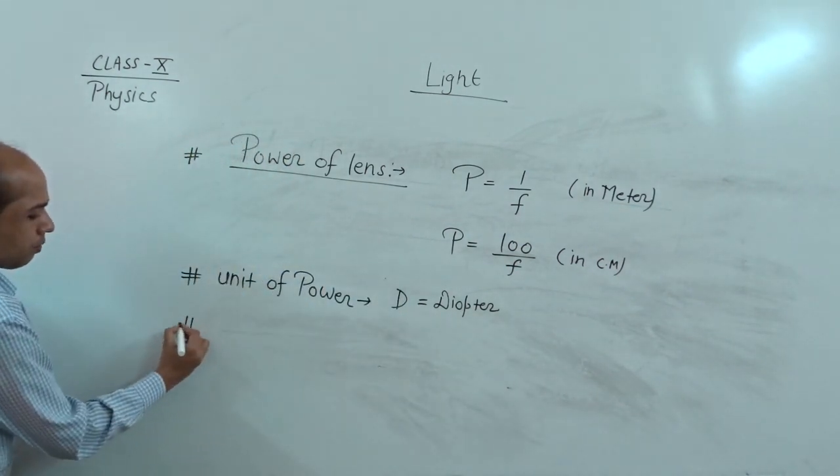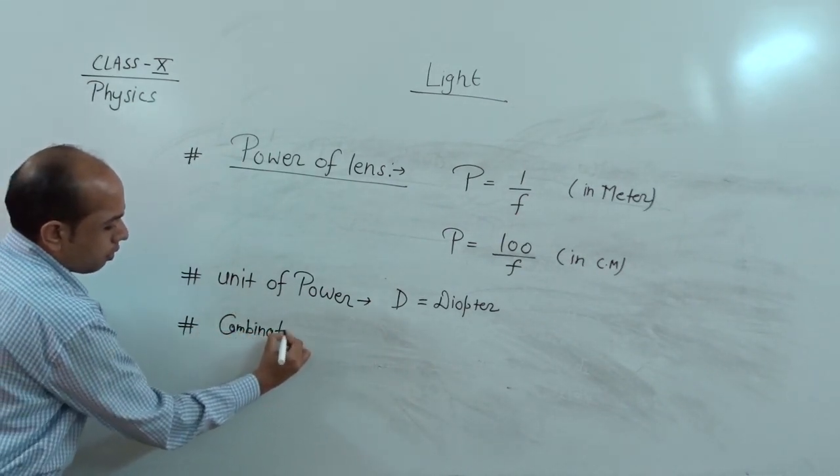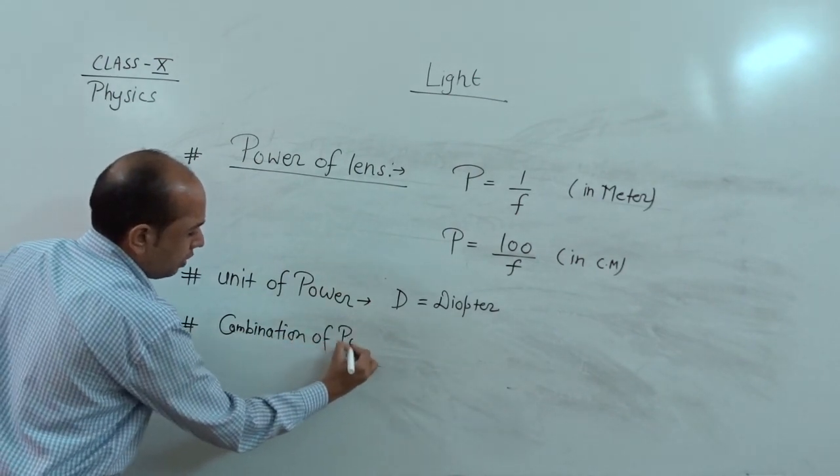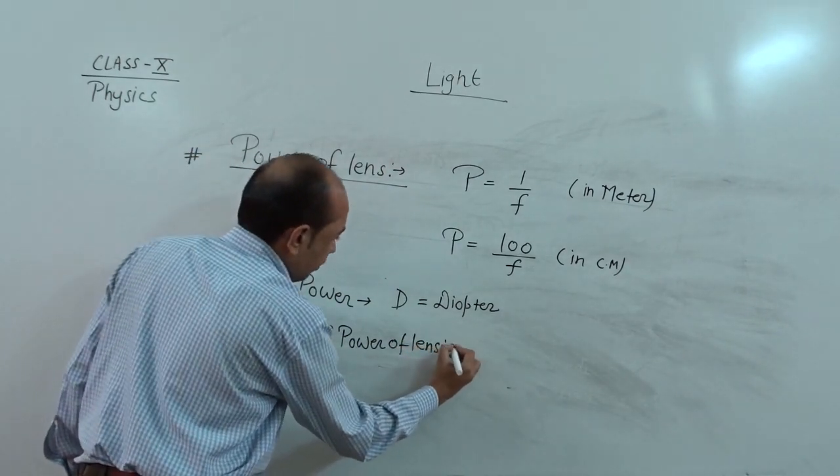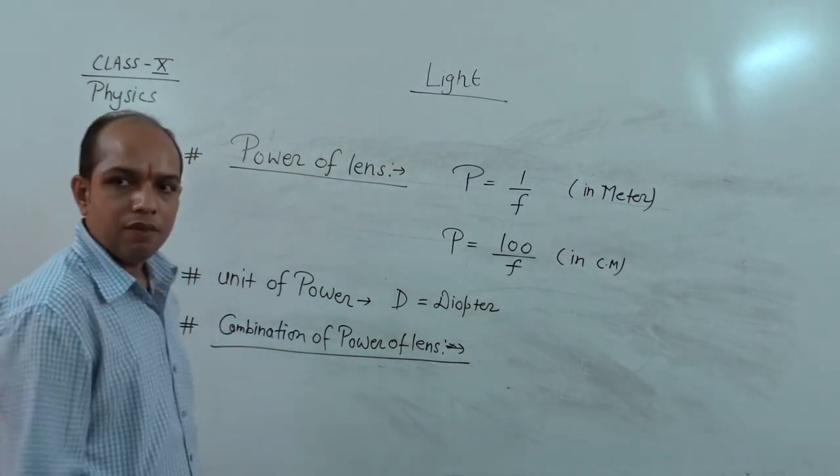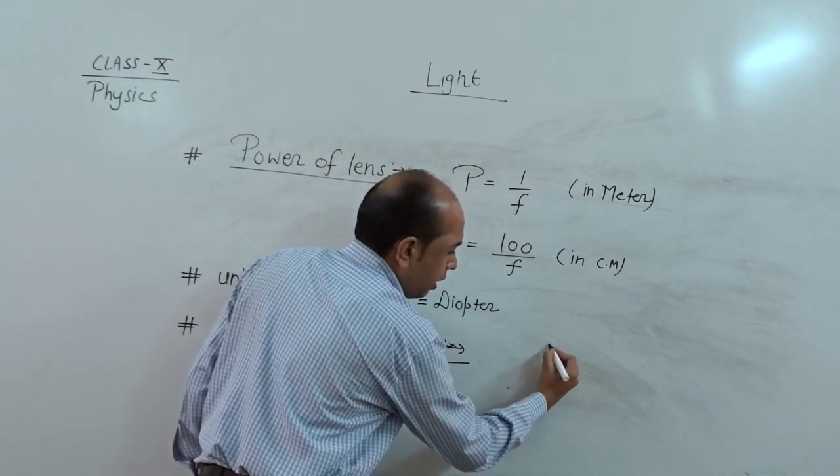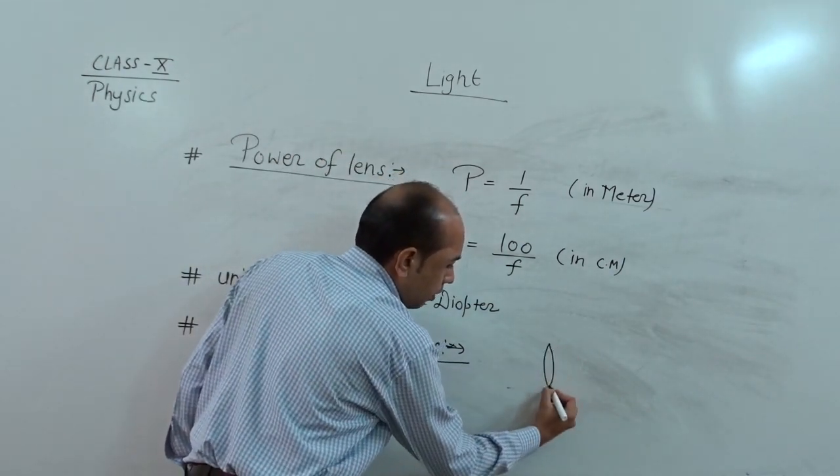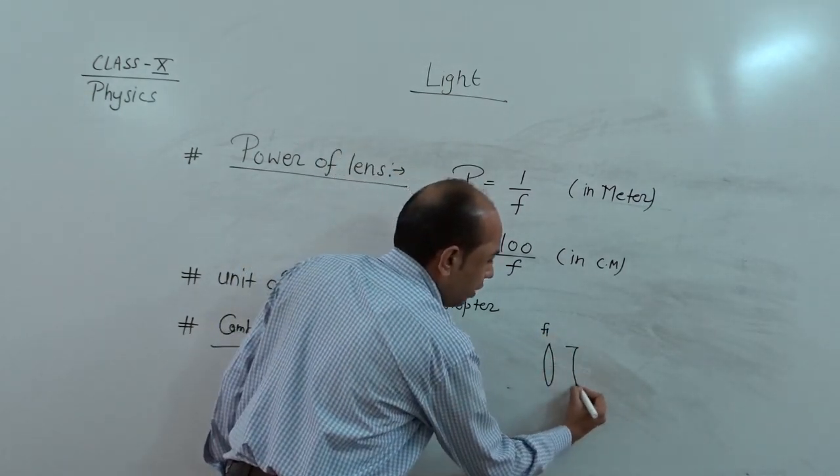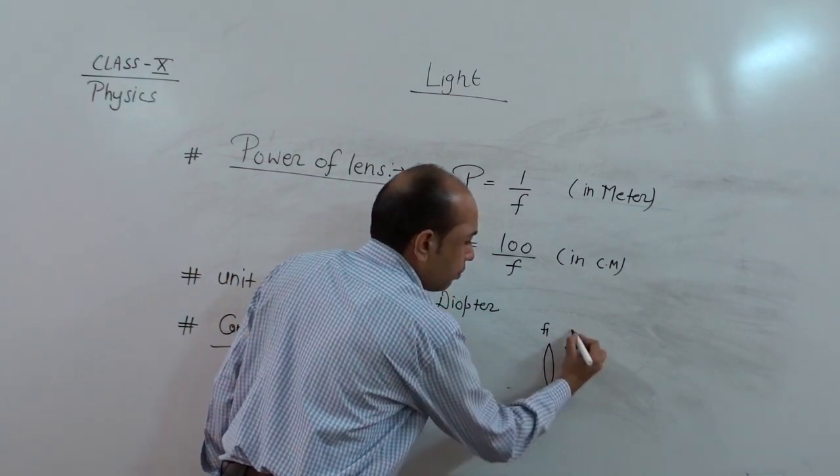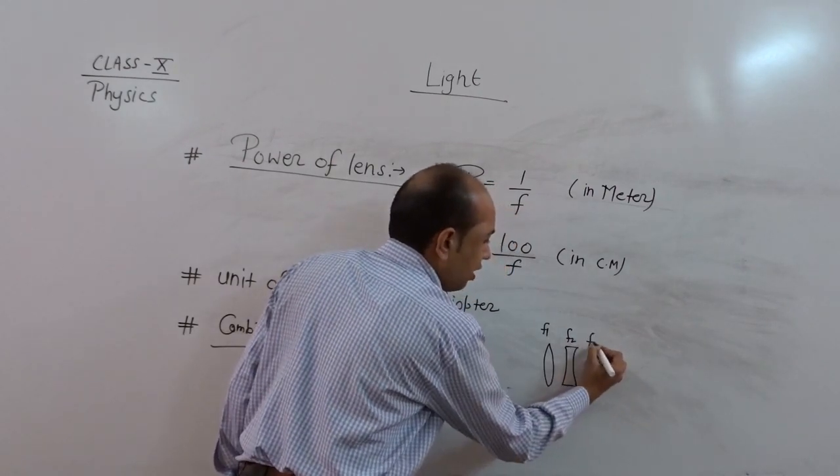Next we see here combination, combination of power of lens. This means here when number of lenses are recombined. For example, suppose if we recombine one convex lens, the focal length suppose f1. After that one concave lens, its focal length is suppose f2. And one more suppose convex lens of focal length f3.